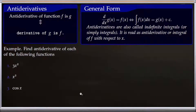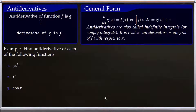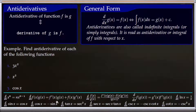Now let's look at some examples. We want to find antiderivatives of three functions: 3x squared, x squared, and cosine of x. Whenever we do antiderivatives, just because we defined antiderivatives using derivatives, some formulas from derivatives can be very helpful. I have these formulas listed so we will use whichever is helpful.